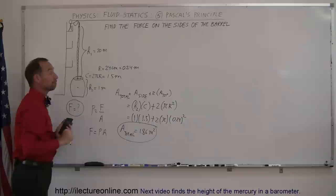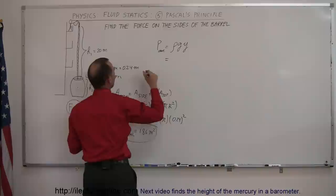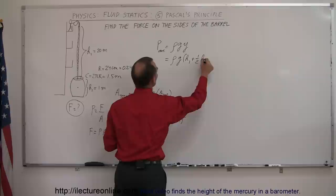We know that the average pressure in the barrel is equal to ρgy. Of course, y is the height of the water column, which would be ρg times h₁ plus half of h₂.